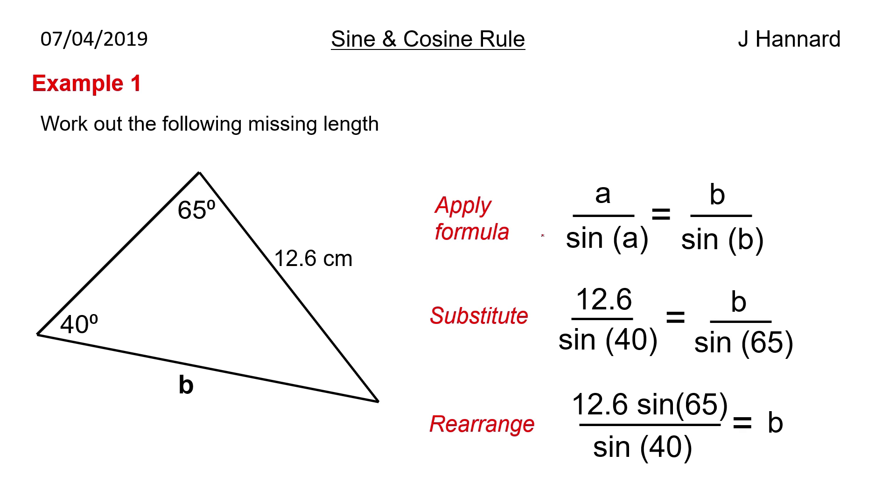We then rearrange, so we say 12.6 times sine 65 over sine 40 is equal to b. So stick that in your calculator. I haven't bothered to do it but in an exam make sure you do. And have it in degrees. You know some people are pesky and put radians on calculators, make sure it's in degrees.